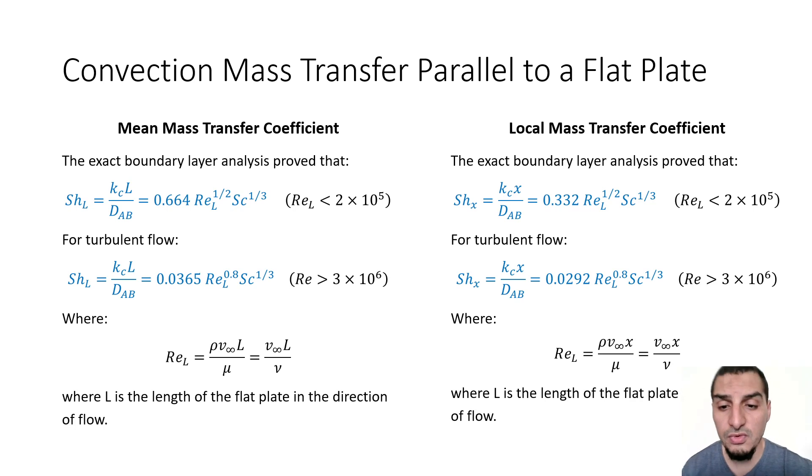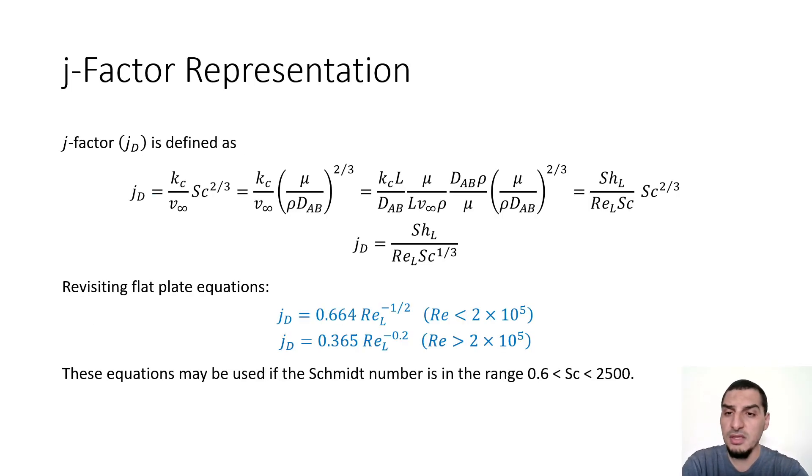These are the equations that we found or we know from before. There is another way of representing the mass transfer coefficient correlation which is the J factor. The J factor is a dimensionless parameter that is used in some cases to calculate the transfer coefficients. It's very famous in heat transfer for calculating the heat transfer coefficient and it's very famous in the design of shell and tube heat exchangers.